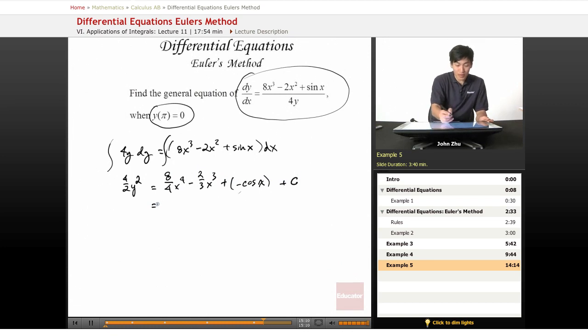So let's rewrite this a little bit. 2x to the fourth minus 2 thirds x cubed minus cosine of x plus c, 2y squared. So then we have to look at the initial condition to find our c value.